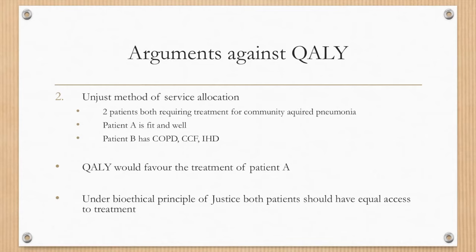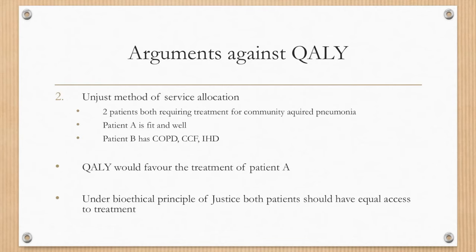It's also an unjust method of service allocation. Consider two patients requiring the same treatment for a community-acquired pneumonia. Patient A is fit and well, and patient B has comorbidities such as COPD, congestive cardiac failure, and ischemic heart disease. If we use QALYs for resource allocation, we would favour the treatment of patient A. But if we consider our first principles, the principle of justice states that both patients should have equal access to treatment. Is it fair for the patient with other medical conditions not to receive appropriate treatment just because the other person will have a higher value of healthy years gained?